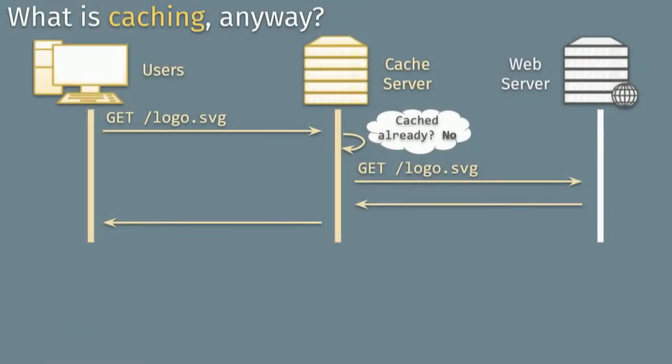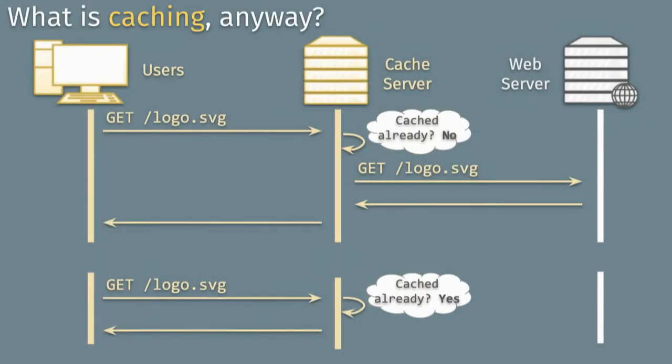Let's talk about caching as a concept. In a typical request, you have your user, your cache server, and your application server. The user requests a static file like logo.svg. The cache server checks its internal memory — has it seen this file before? If it has, it serves it right back. If not, it fetches it upstream, sends it back to the user, and caches it so the next request can be served without going upstream again. This speeds everything up by skipping a whole HTTP transaction.